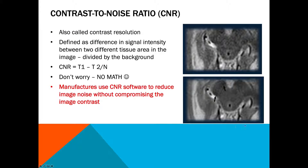Contrast to noise ratio, also called contrast resolution, is defined as the difference in signal intensity between two different tissue areas in the image, divided by the background. There is a math equation, but there's no math on the exam. What you need to know is that this is manufacturer specific — manufacturers use contrast to noise ratio software to reduce image noise without compromising image contrast. You can see one image has more noise and one has less, but the contrast hasn't been changed.